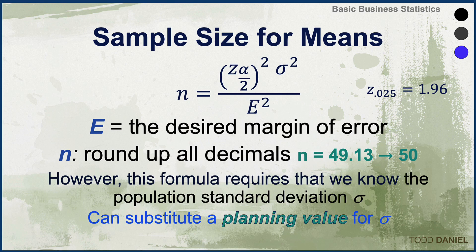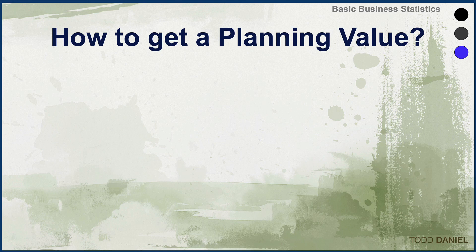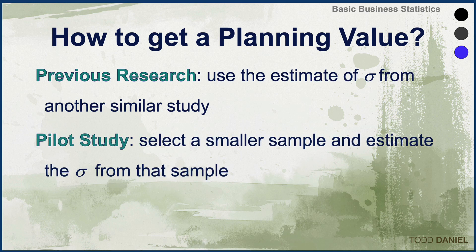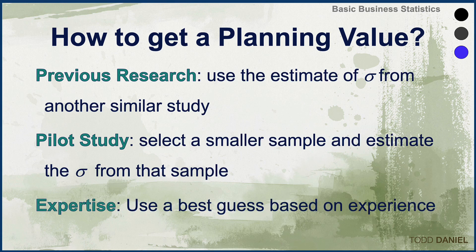We can substitute a planning value for this population standard deviation, which is unknown. There are three ways we might approach this. The first way is from previous research — we can use an estimate of sigma from another similar study. A second approach would be to do our own data collection and conduct a pilot study, selecting a smaller sample and estimating sigma from that sample. A third way is expertise — using your best guess based on your experience as a researcher.